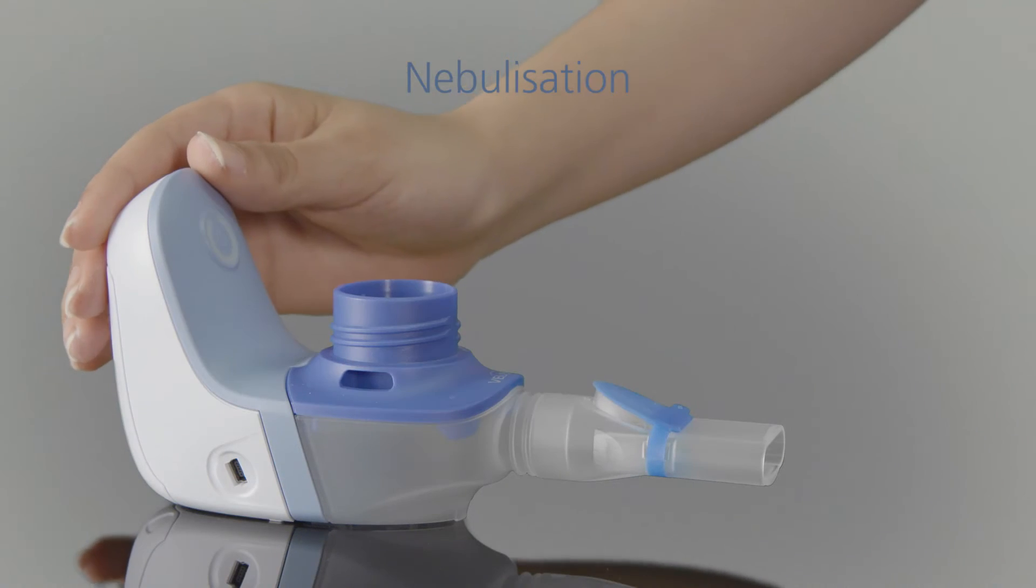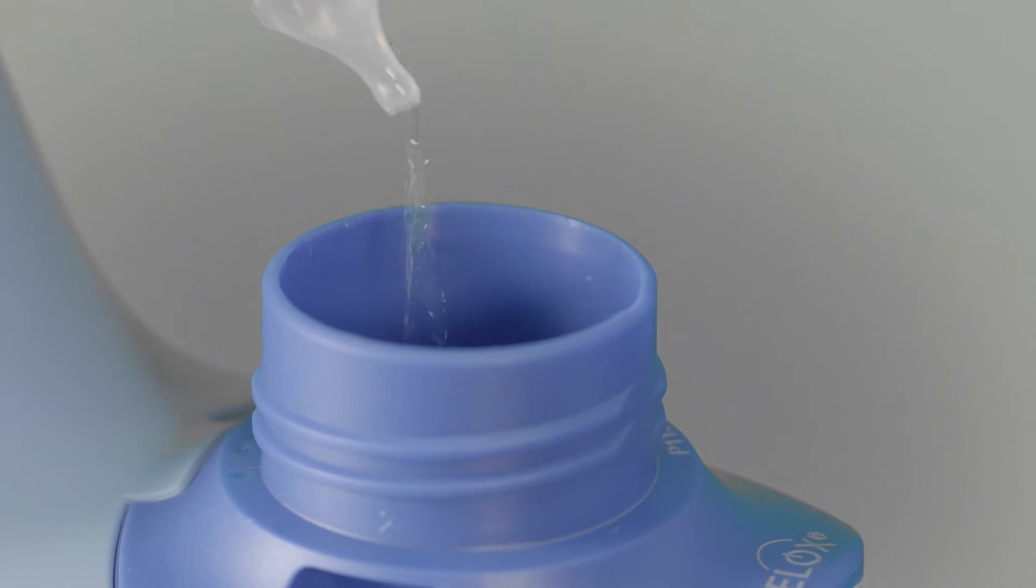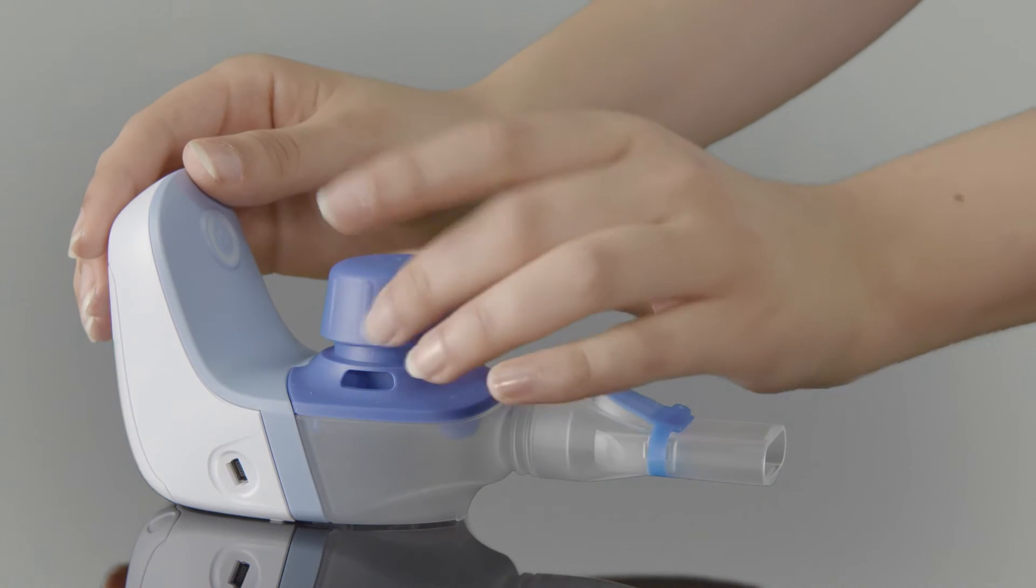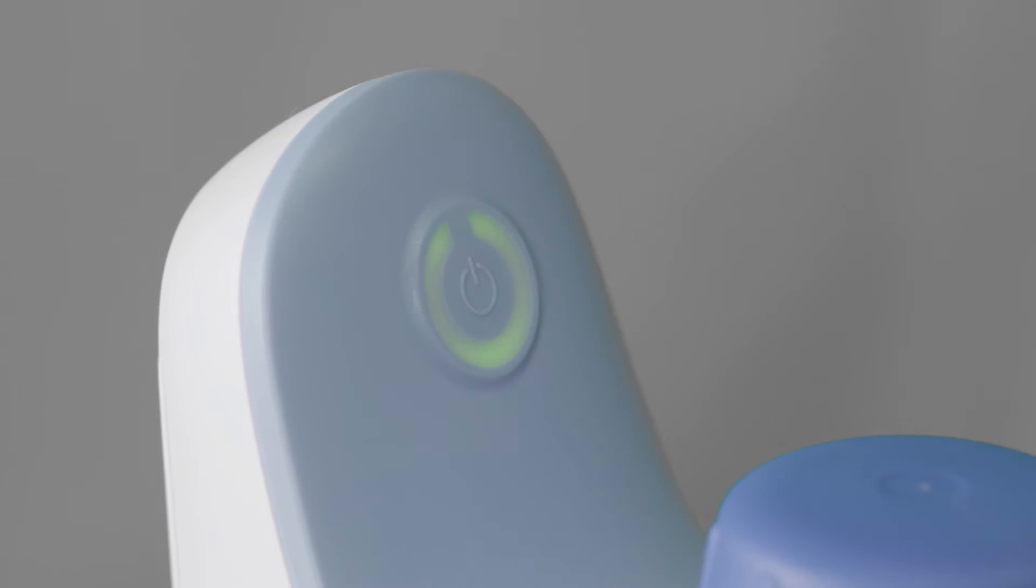Using the device is so simple. Pour the inhalation solution into the top of the nebulizer. Once finished, tightly close the lid again and switch Velox on.